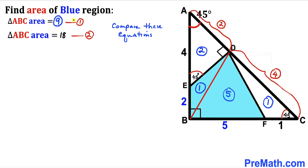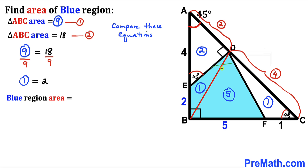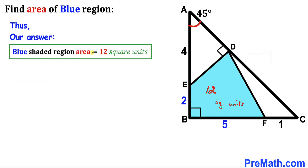Comparing equations 1 and 2, the left-hand sides are identical, so we equate the right-hand sides: 9 circle-units equals 18. Dividing both sides by 9, one circle-unit equals 2. The blue shaded region area is 1 plus 5 circle-units, which equals 6 circle-units. Multiplying by 2, the area of the blue shaded region is 12 square units. Thanks for watching and please don't forget to subscribe.